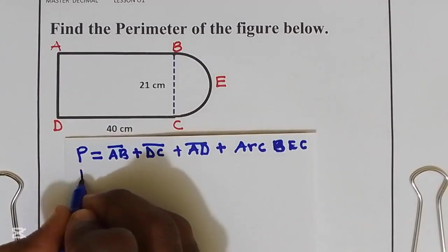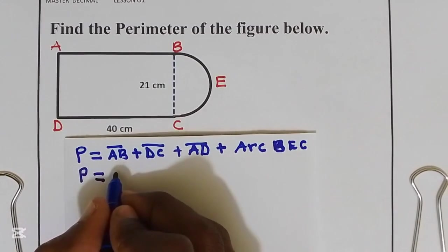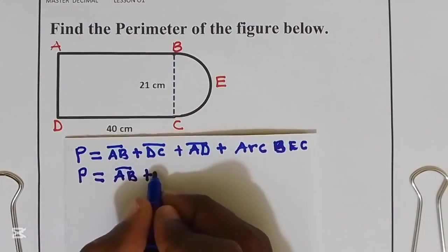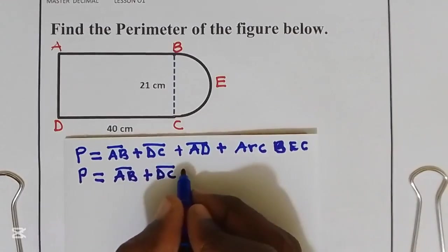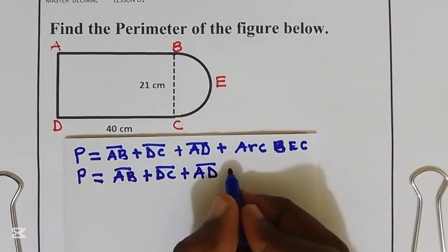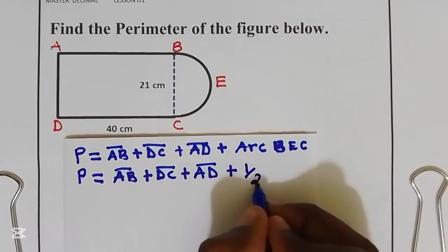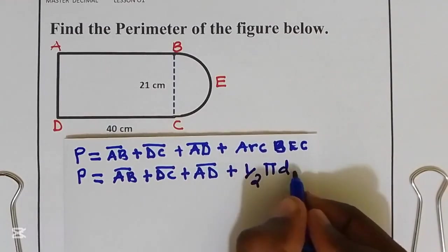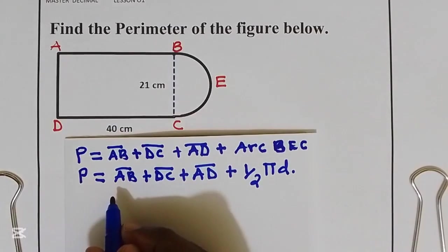So our perimeter is equal to distance AB plus DC plus AD plus half pi D. Let us substitute our distances.